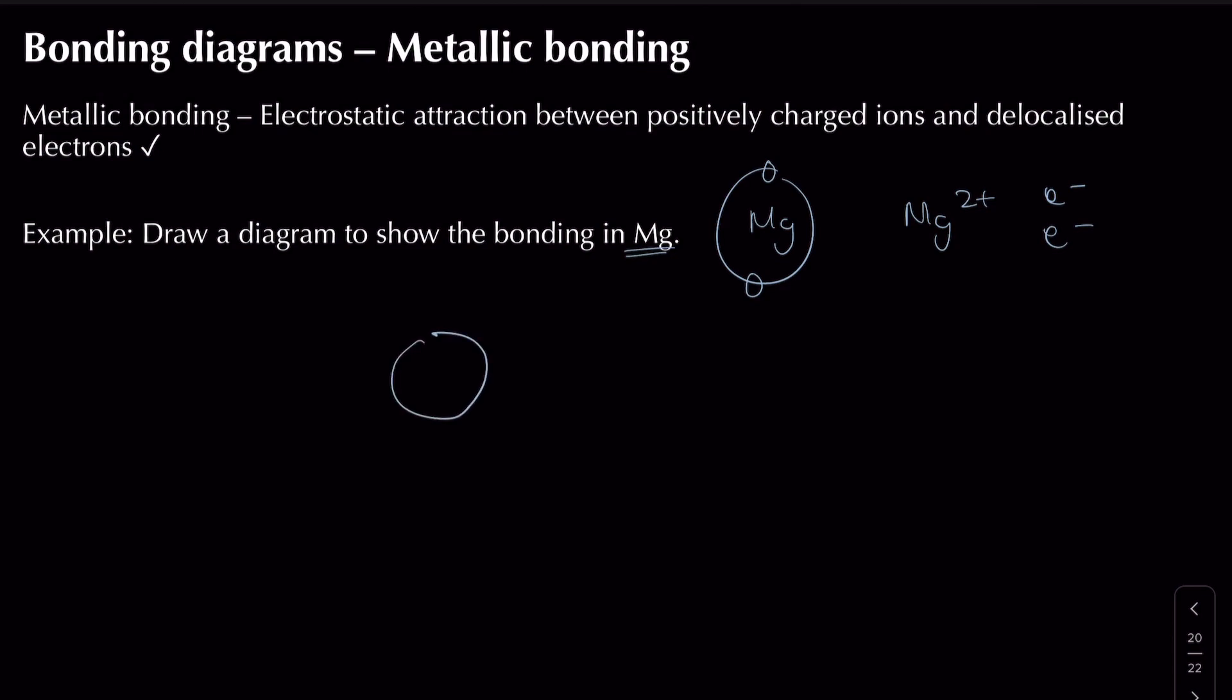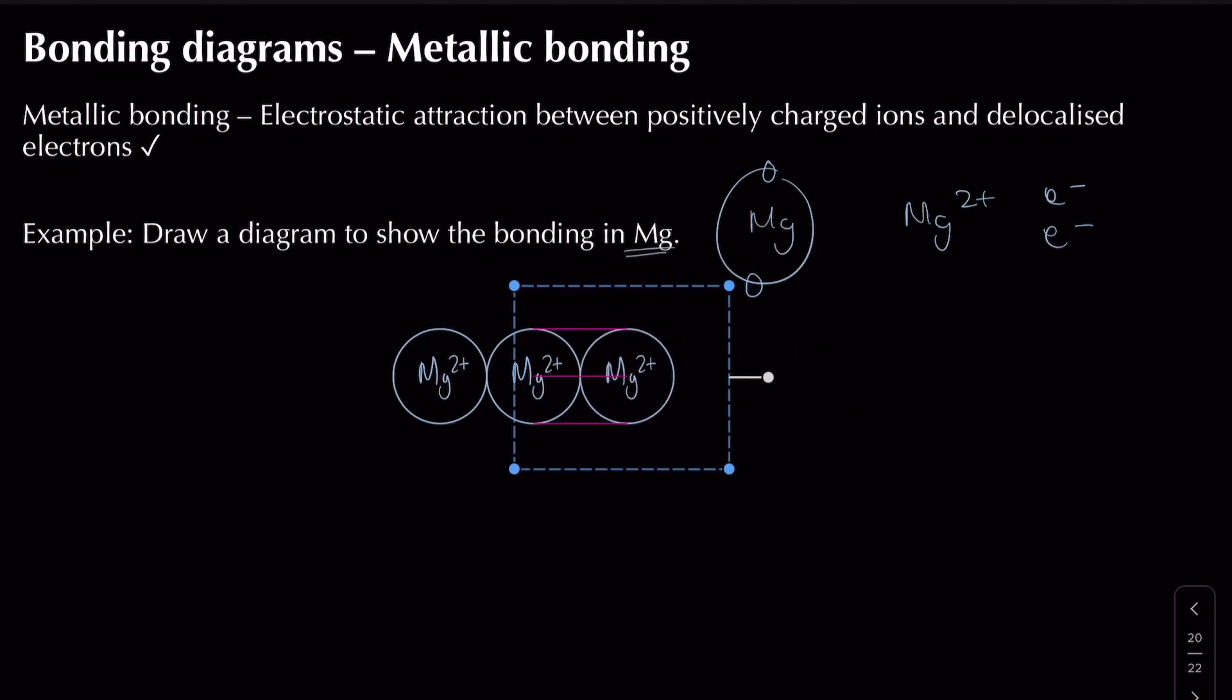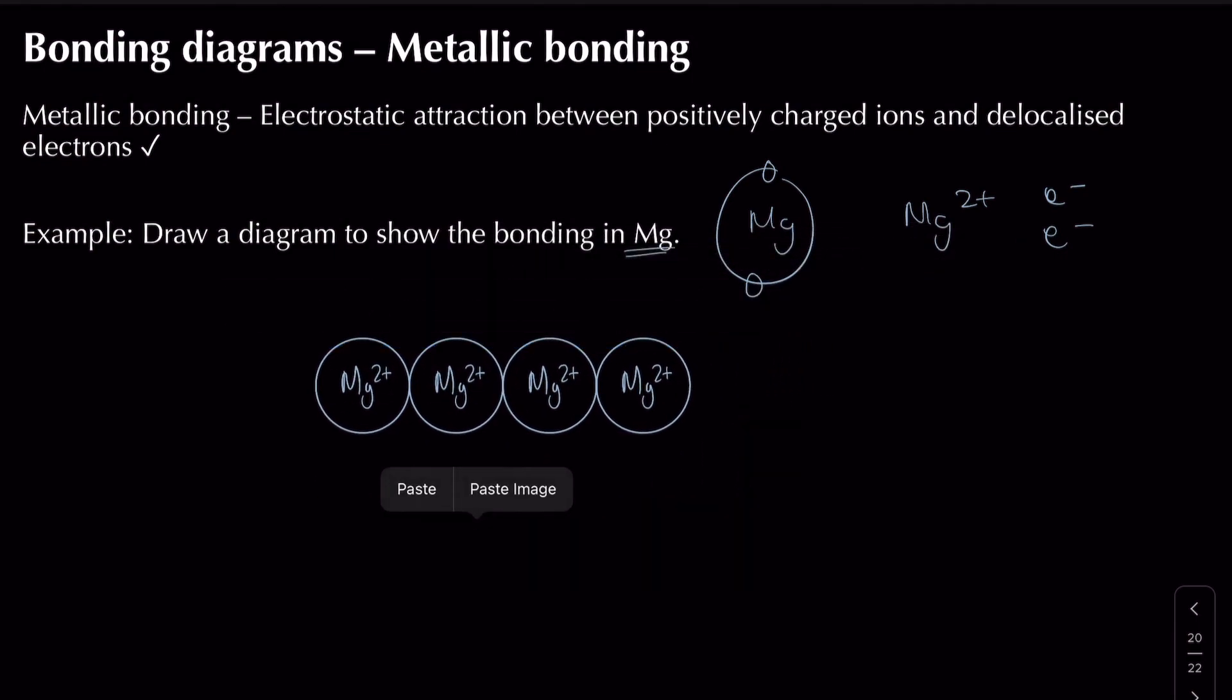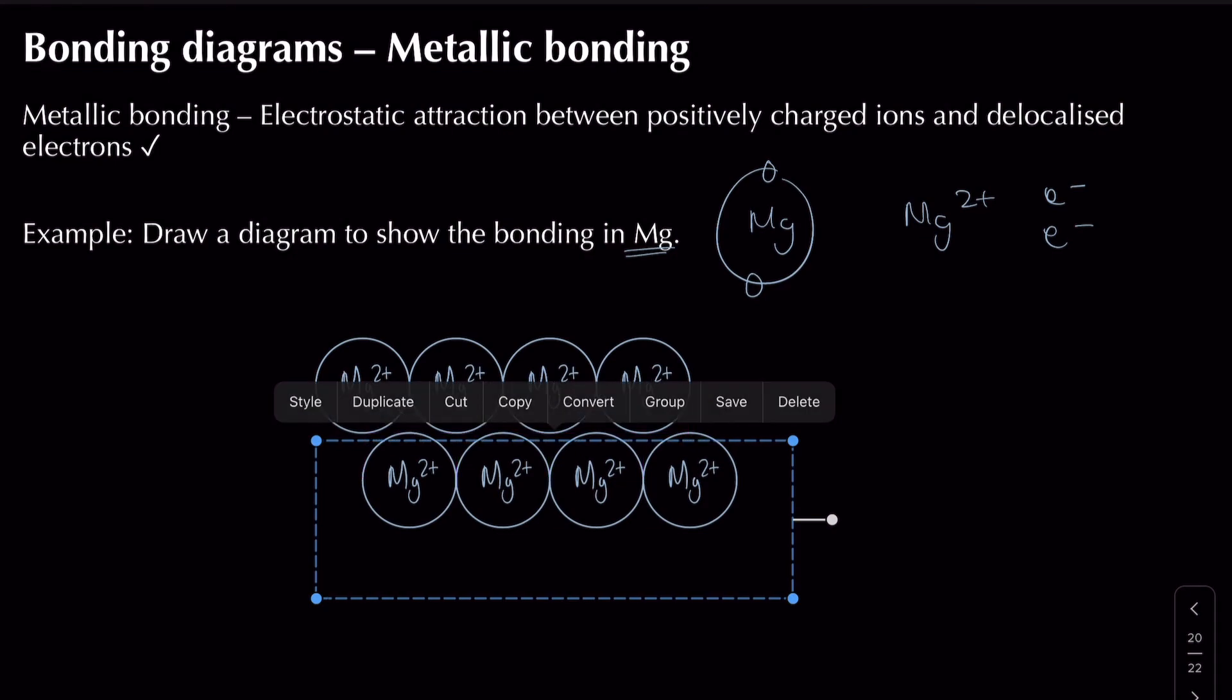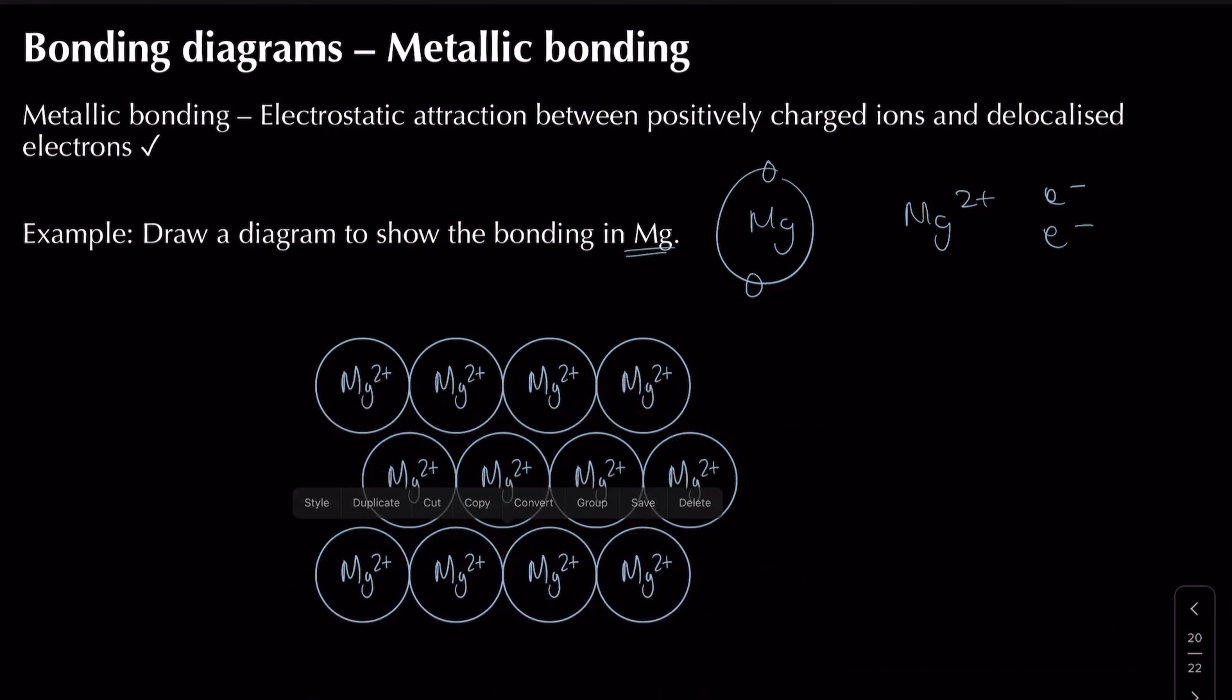If I were to draw a diagram for this, I would need to first draw out some positive metal ions like magnesium 2+ in this case. I would need to show a three by four diagram where I've got four positive metal ions in a row and three rows of this. Moving it slightly to the right and this one to the left, I end up with this kind of zigzag shape.